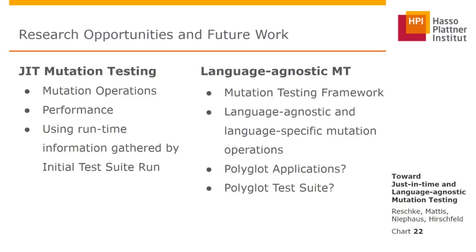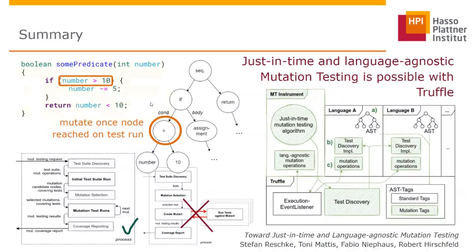To give a quick summary: we started from wanting to determine where we can remove an if-statement, and realized mutation testing is usually done with ahead-of-time mutation testing in a separate process. Instead, we used just-in-time mutation testing, which enables us to use the runtime interpretation of the code — the AST — and once our tests reach the node we want to mutate, we use the interpreter to do the mutation. Since we presented a mutation tool that does exactly this, just-in-time and language-agnostic mutation testing is possible with Truffle. Thank you.